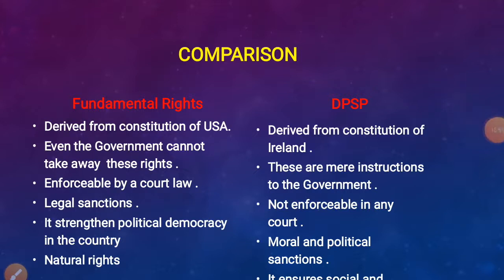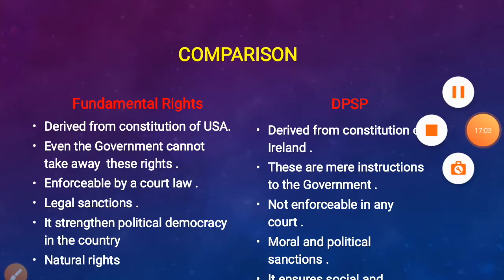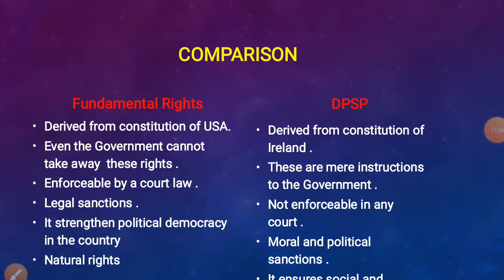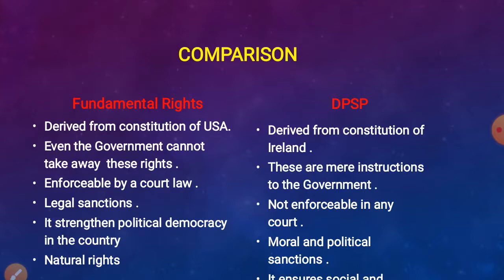Fundamental Rights are derived from the Constitution of the USA, while Directive Principles of State Policy were drawn on the model of the Constitution of Ireland. Fundamental Rights — even the government cannot take away or abridge these rights; Directive Principles are mere instructions to the government. Fundamental Rights are enforceable by a court of law, but Directive Principles are not enforceable in any court. Fundamental Rights have legal sanctions, but Directive Principles have moral and political sanctions. Fundamental Rights strengthen political democracy, but Directive Principles ensure social and economic democracy. Fundamental Rights are natural rights; Directive Principles lead to protection of human rights.